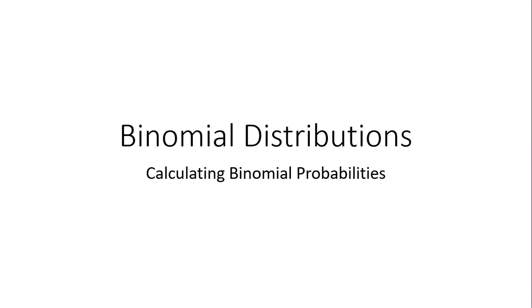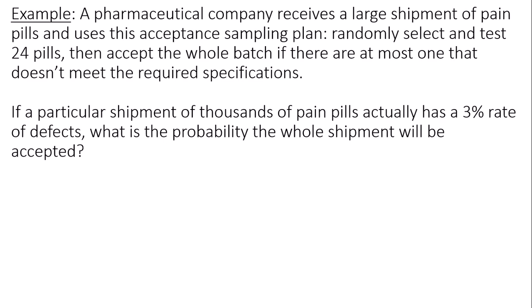Hello, this is a video on how to calculate binomial probabilities. A pharmaceutical company receives a large shipment of pain pills and uses this acceptance sampling plan. They randomly select and test 24 pills, then accept the whole batch if there are at most one that doesn't meet the required specifications. If a particular shipment of thousands of pain pills actually has a 3% rate of defects, what is the probability the whole shipment will be accepted?